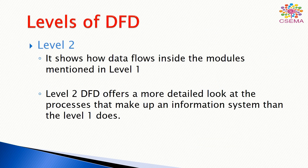The last one is level 2. Level 2 shows how data flow is actually found and implemented inside the modules already mentioned in level 1. Level 2 describes a more detailed look at the processes that make up an information system. So in summary, level 0 is the more abstract form, level 1 is a more expanded form, and level 2 is the most expanded and detailed form of level 1 or level 0.